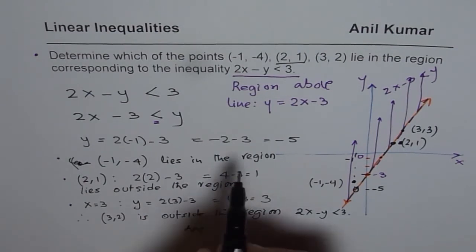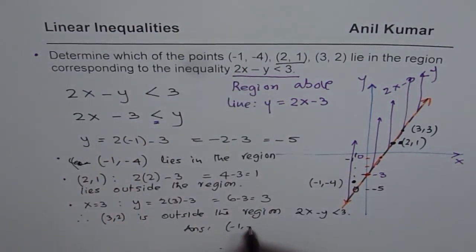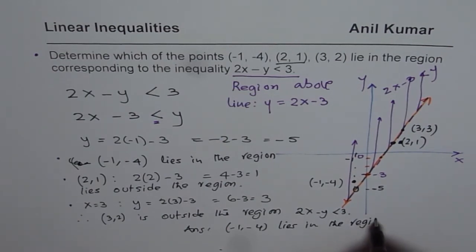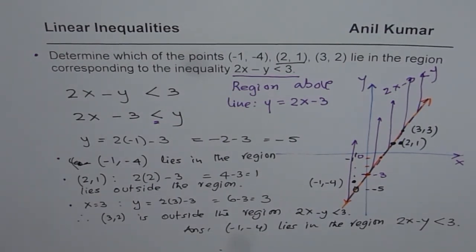Our answer is the point (-1, -4) lies in the region 2x - y < 3. I hope you understand this strategy. The strategy is: find y value of the points for the given x values and then relatively check. Since we are not using a graph paper here, this is the best strategy. On a graph paper, you can actually draw a line, plot the points and you can clearly see which points lie and which do not lie. I hope that helps. I am Anil Kumar, you can subscribe and learn different techniques of answering questions with the help of my videos. Thank you and all the best.